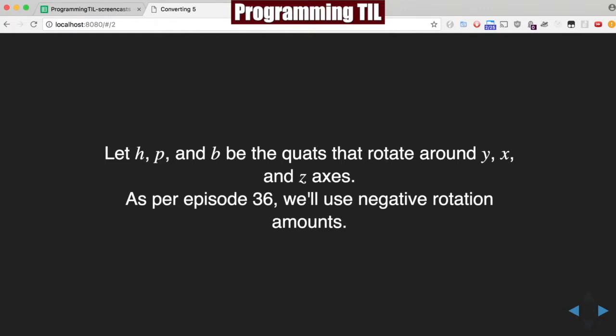We're going to let H, P, and B be the quaternions that rotate around the Y, X, and Z axis, respectively. As per episode 36, we're going to give negative rotation amounts, and if you don't recall why, you should go ahead and watch that video again.